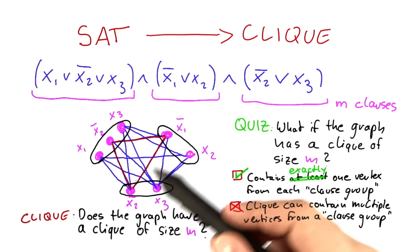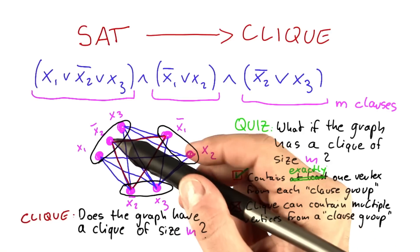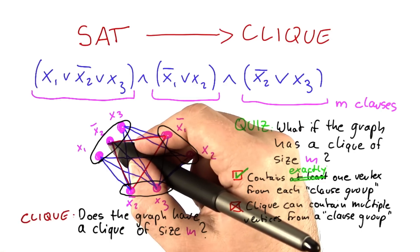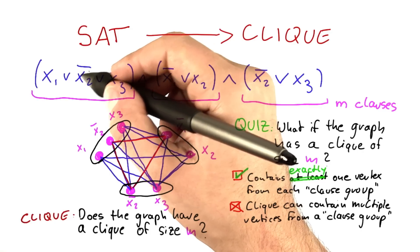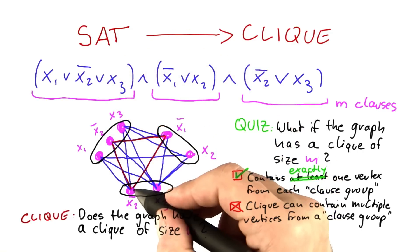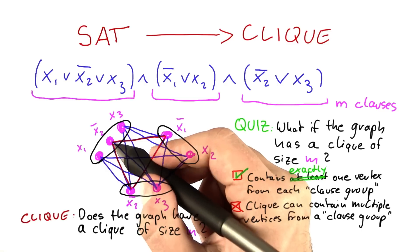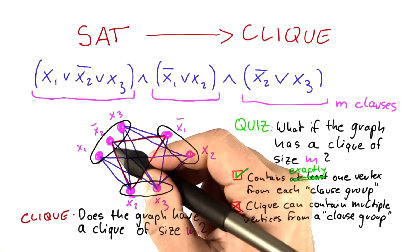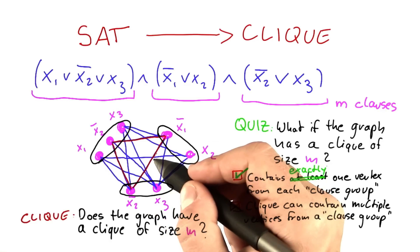There's two cases here. So let's say the graph does have a clique of size m. Then what will happen is the following. It contains exactly one vertex that corresponds to a variable in that clause. And what we also know is, because we constructed the graph this way...